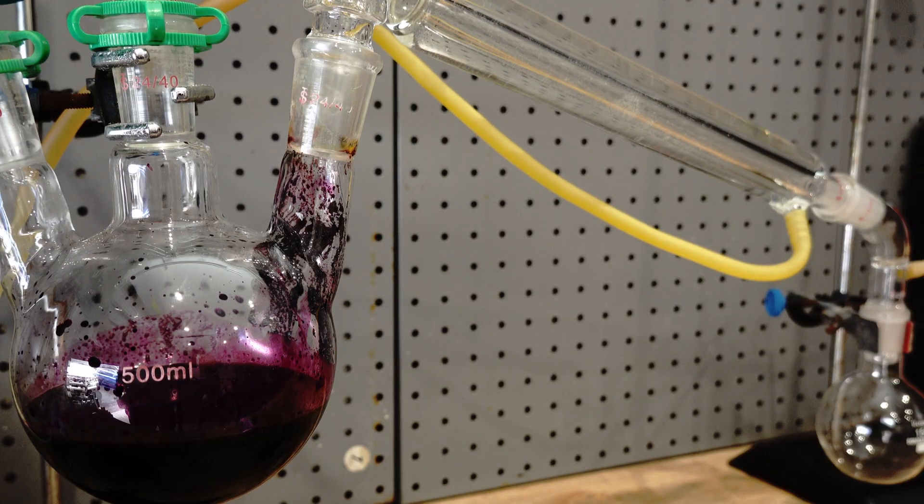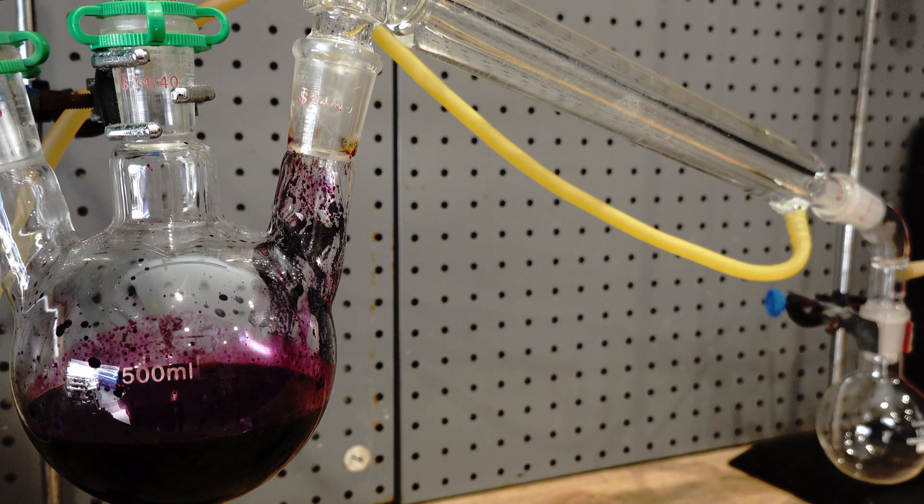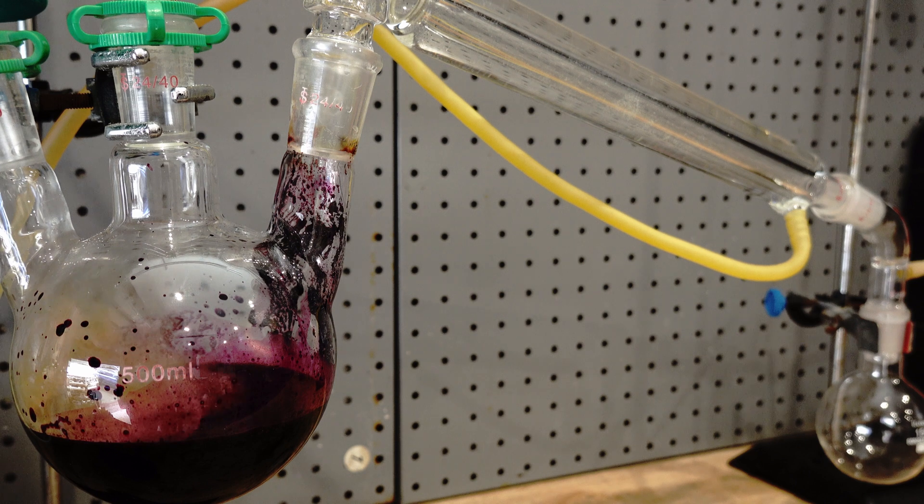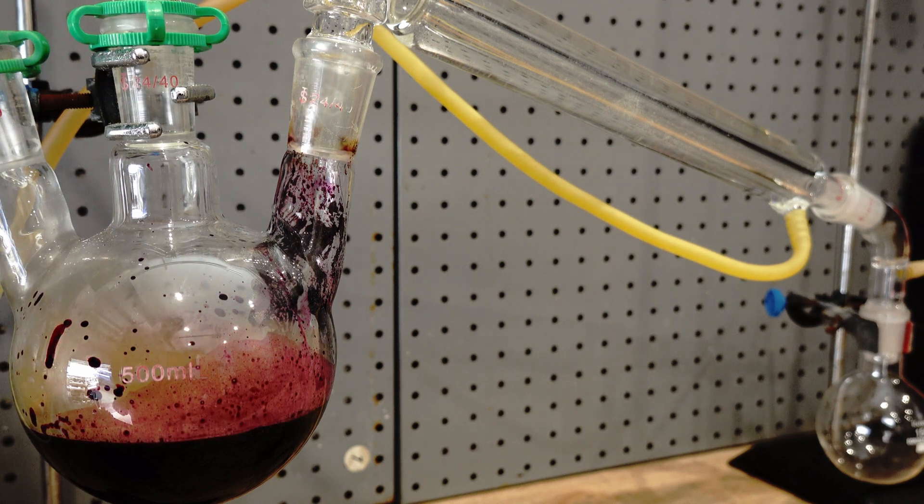I set up a simple distillation apparatus. As the sulphuric acid is added dropwise and the Bromine is generated, it will slowly boil off and recondense into liquid Bromine flowing into our collection flask.